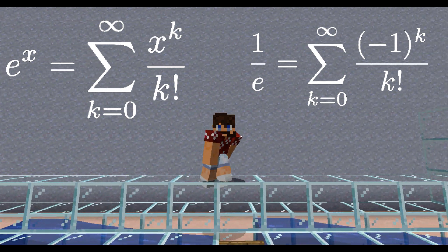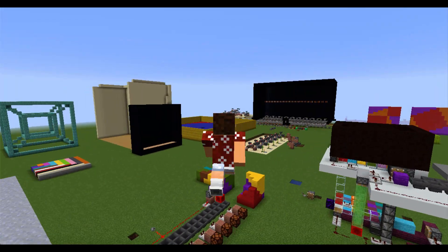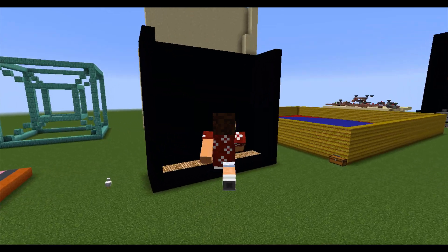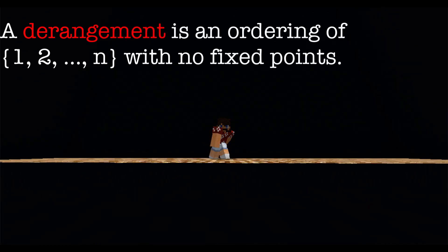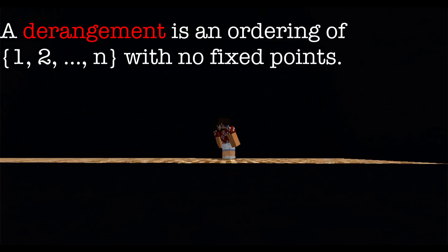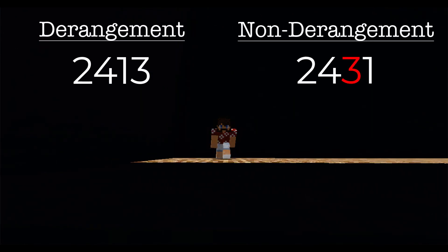Remember that — we'll see it again. Now let me fly over to my Blackboard studio so I can talk to you about derangements. A derangement is an ordering of the numbers 1 through n such that for all k, k does not appear in position k. So for example, 2, 4, 1, 3 is a derangement.